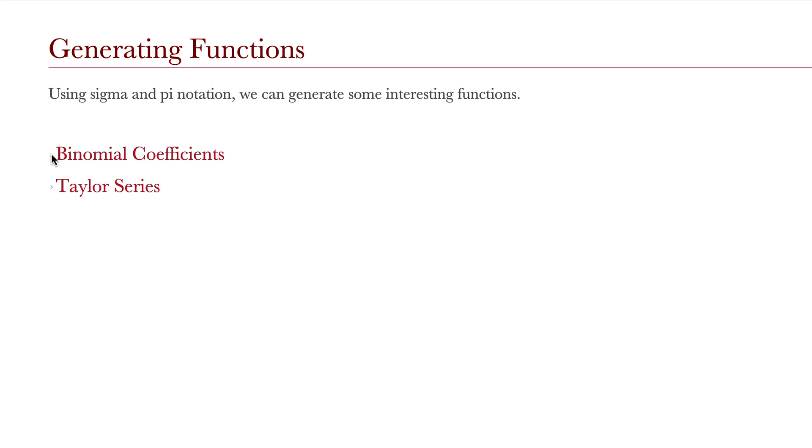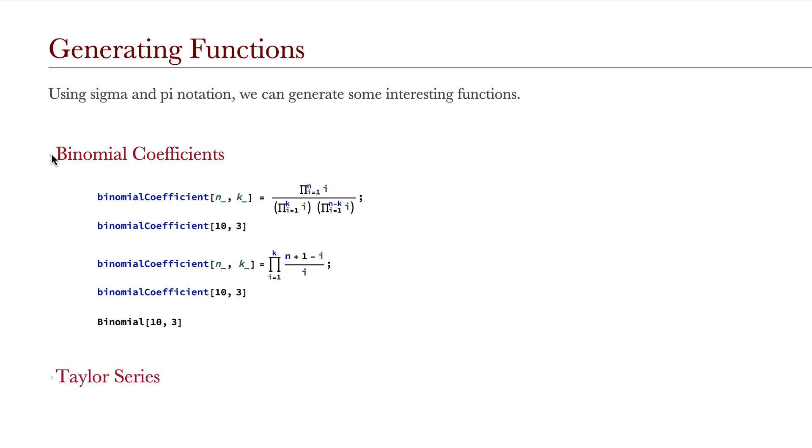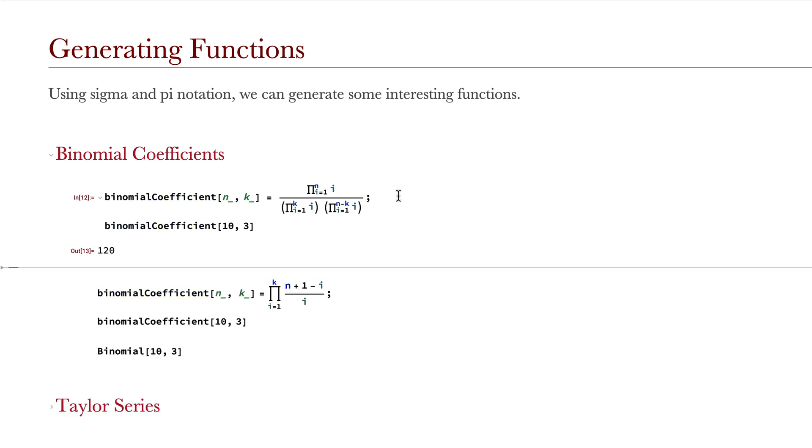Using sigma and pi notation together, we can generate some interesting functions. For example, here, we have a unique definition of the binomial coefficient of n, k. Evaluating this in the Wolfram language, we can see that it comes out to the correct value for the binomial coefficient of 10, 3.